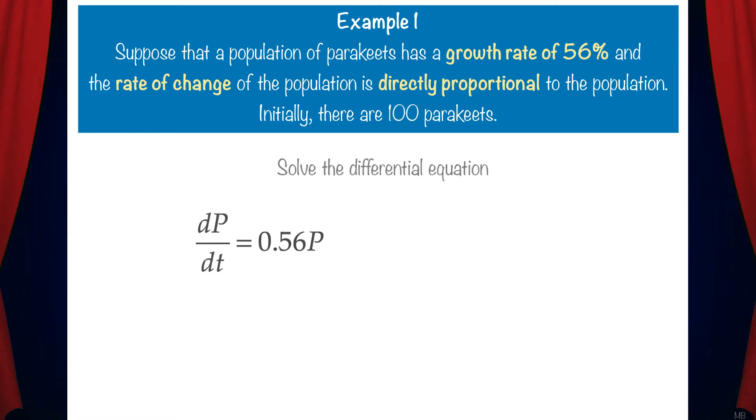Now let's solve the differential equation. We can solve this by jumping to the solution and that gives us p equals c e to the 0.56t. We know that p of 0 equals 100, so that means c equals 100. So the population equation for this scenario is p of t equals 100 e to the 0.56t.